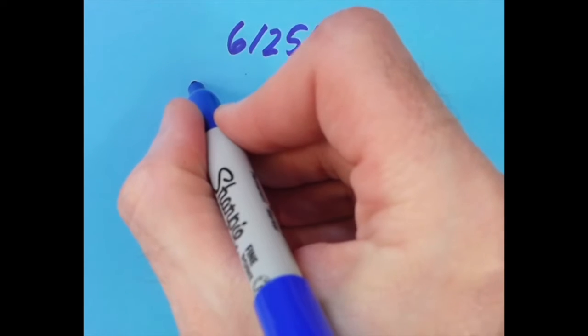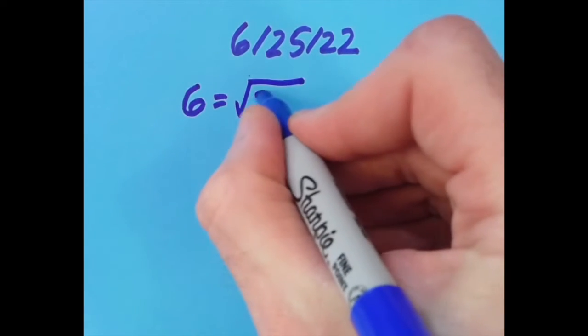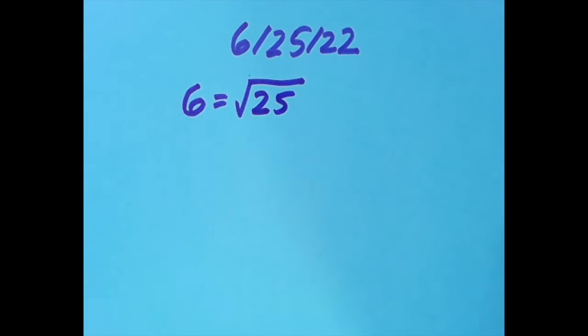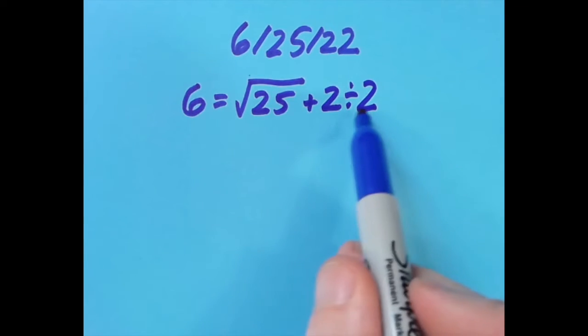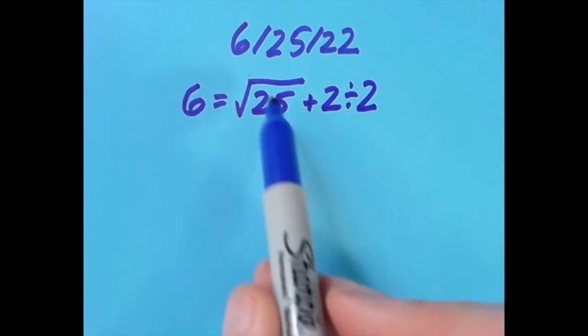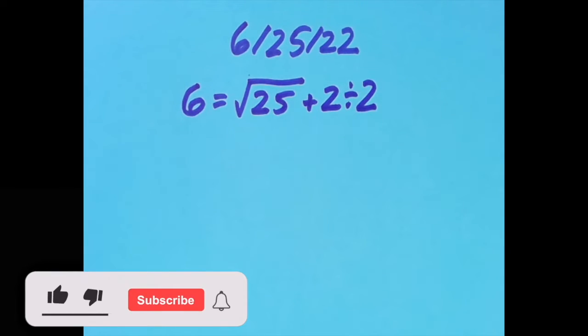What I did here is try to use that 25 as a perfect square. I said that 6 equals the square root of 25, which is 5, plus 2 divided by 2. We have to do the division before the addition, so this is 5 plus 1, which gives us 6.